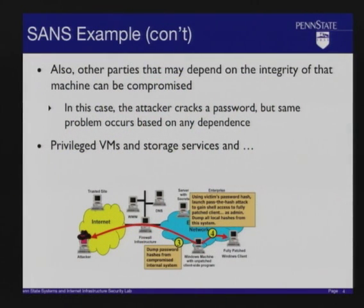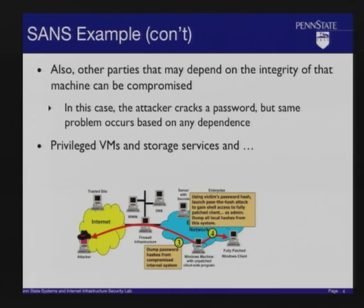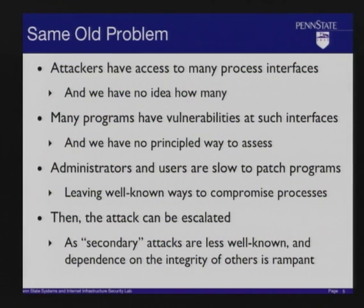The bad guy then gets access to files with authenticating information — in this case a password file, which may contain the administrator password not only for an individual system but for the whole Windows domain. They would run a password cracker such as John the Ripper on this file and knock over the whole domain. These are the same old problems we've been fighting for many years. Attackers move around, new vulnerabilities are found, and they're improving their means for delivering malware and hiding exploits.